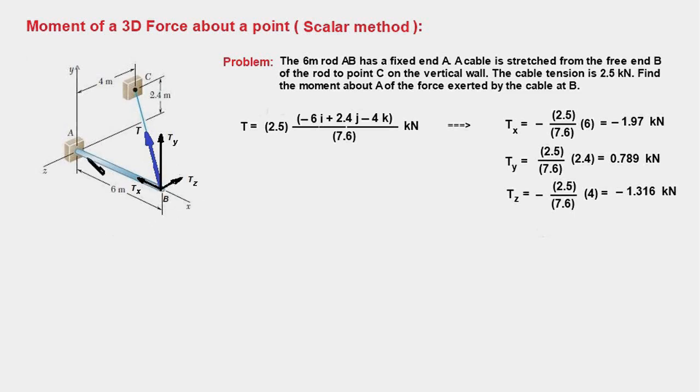First we write the force T in vector form, and that is given here, which is the magnitude of the force T—it is 2.5 kilonewtons—and this is the unit vector along BC. I am sure you are conversant with finding the unit vector along BC, and that is going to be the position vector BC divided by its magnitude.